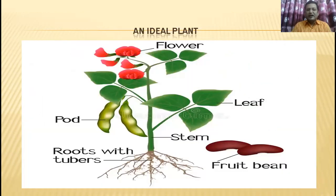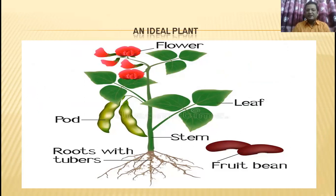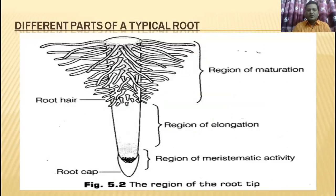You can see an ideal plant. I know you know all the parts of the plant. For your recall: flower, leaves, stems, roots, and other parts are all present in an ideal plant. If I ask you the different parts of a typical root, you can definitely give the answers.